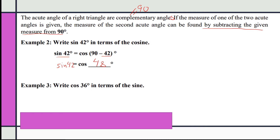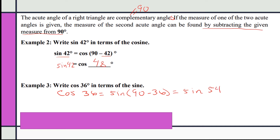Now for the cosine of 36 written in terms of sine: the cosine of 36 is equal to the sine of 90 minus 36. So the cosine of 36 equals the sine of 54, because we simply subtract from 90.